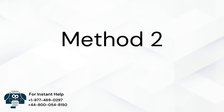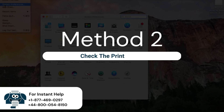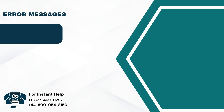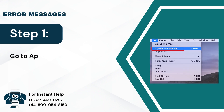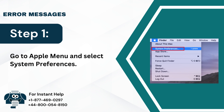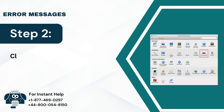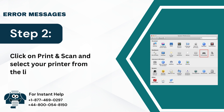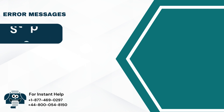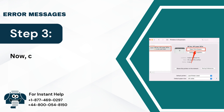Method 2: Check the print queue. Step 1: Go to Apple menu and select System Preferences. Step 2: Click on Print and Scan and select your printer from the list. Step 3: Now click on Print Queue.